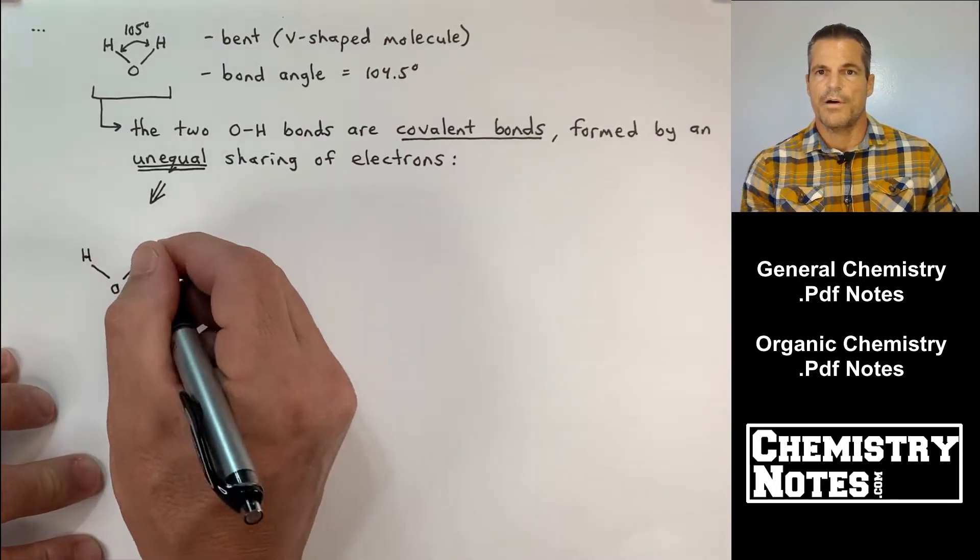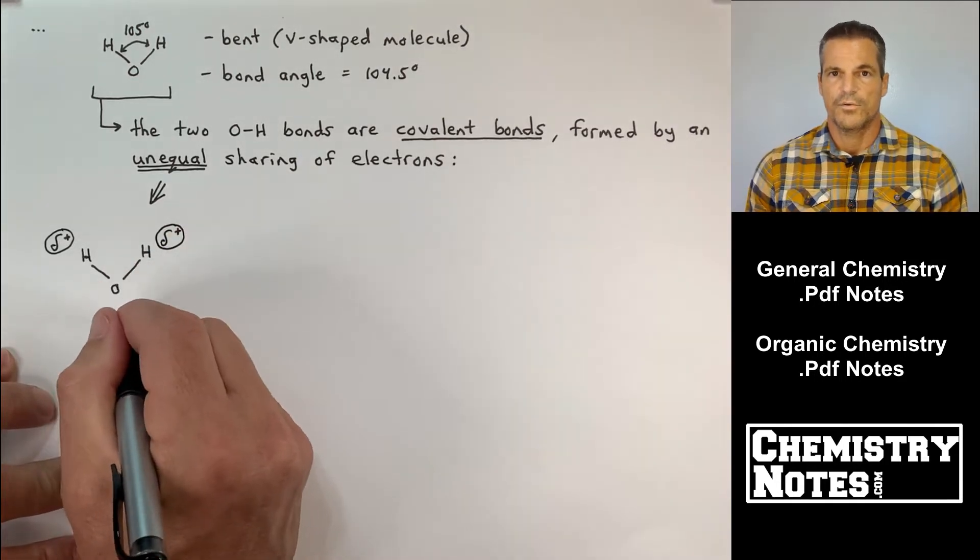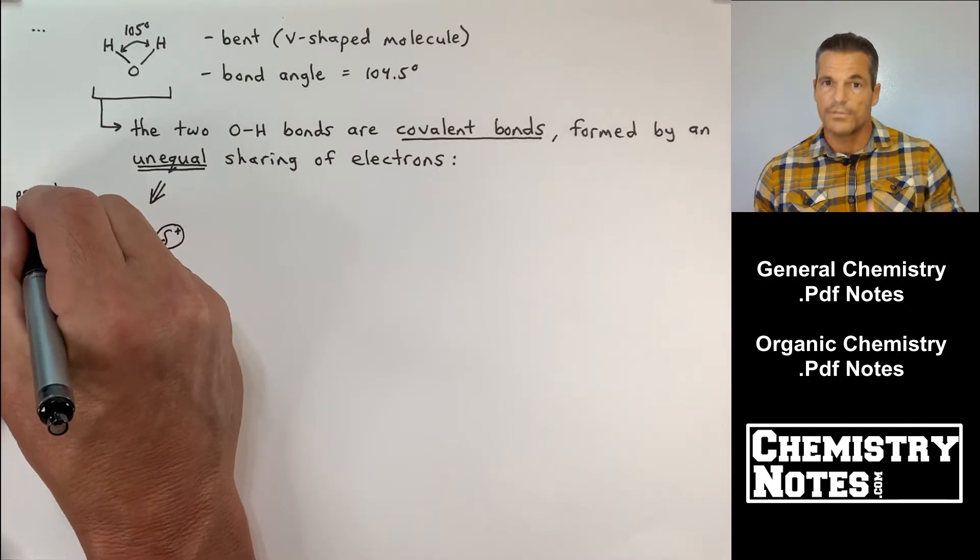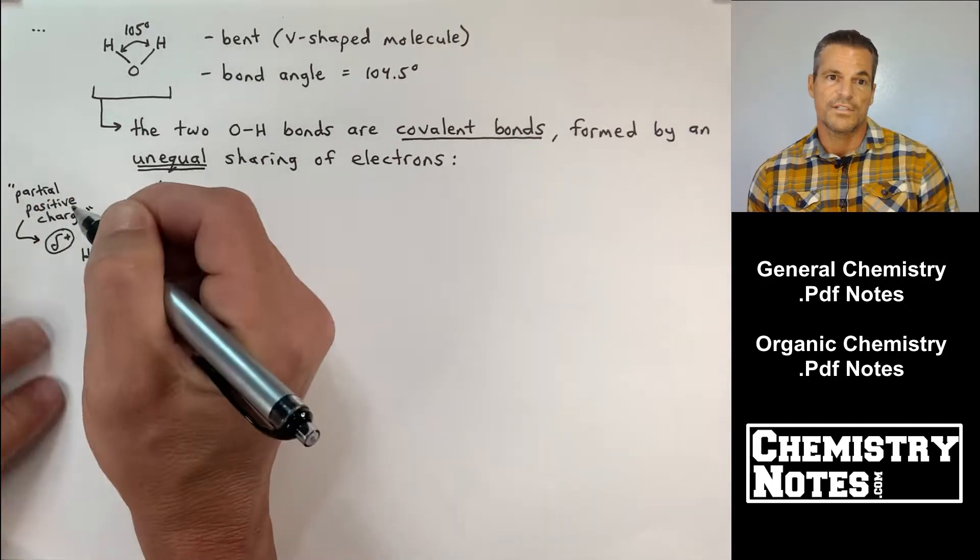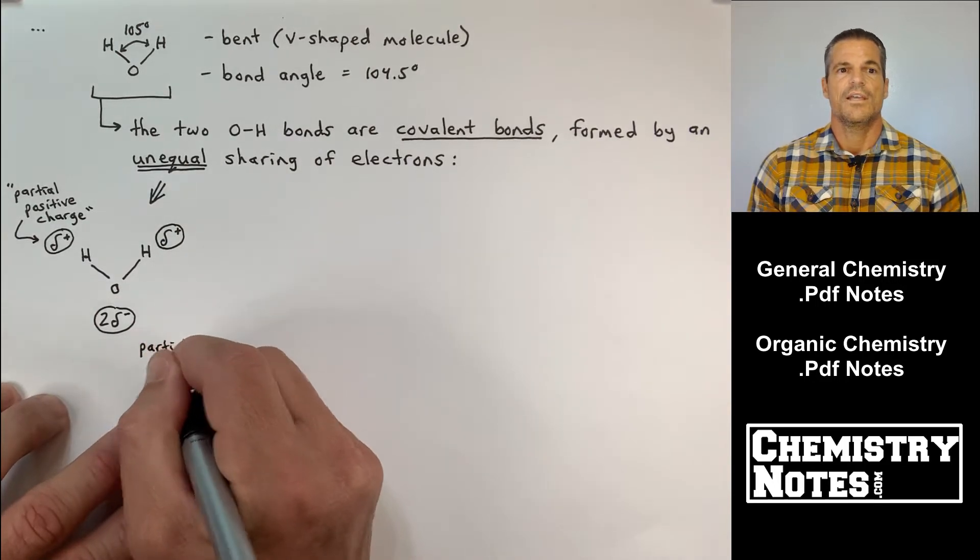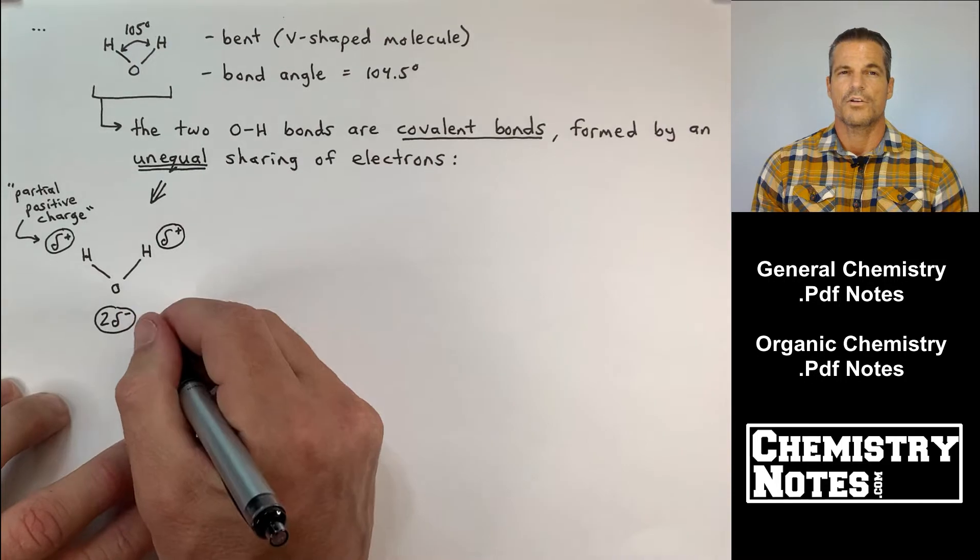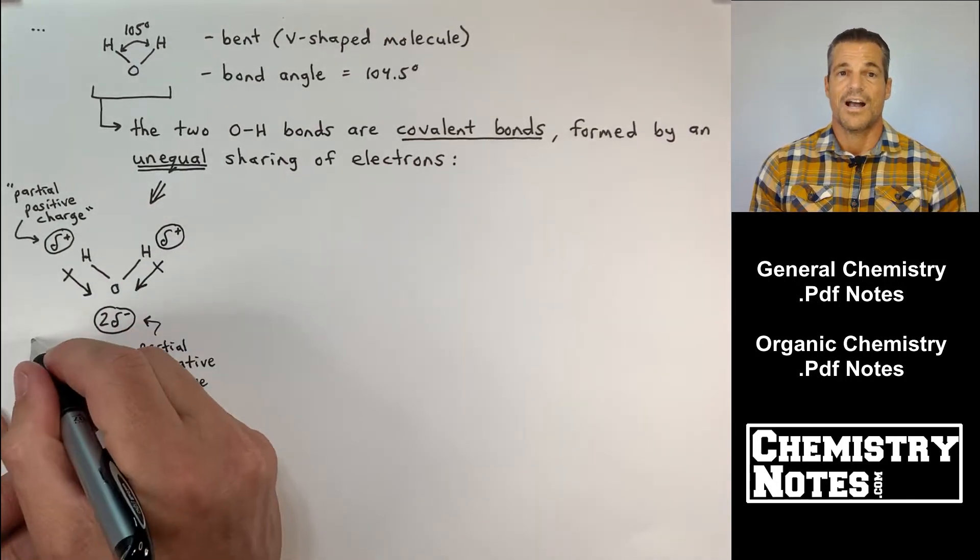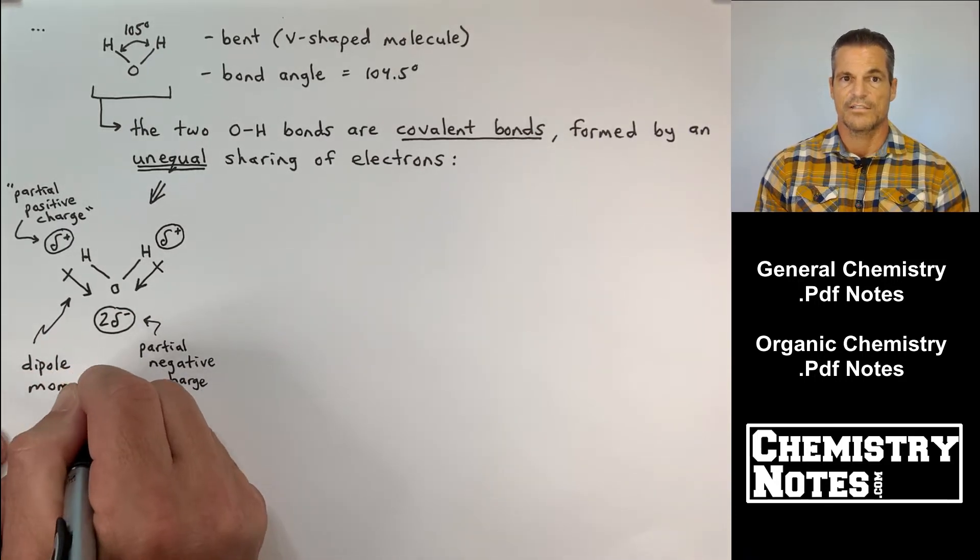Essentially the covalent bond is like a tug of war, tug of war between for the two electrons in the covalent bonds and oxygen is winning. So oxygen is drawing most of that, the electrons towards itself. So the H ends of the molecule are partially positively charged.